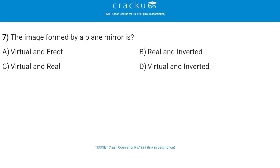Next: the image formed by a plane mirror is — the correct answer is virtual and erect. Plane mirrors always produce an image that is virtual, erect, laterally inverted, and of the same size as the object. Also, the image distance from the mirror is always equal to the object distance from the mirror.